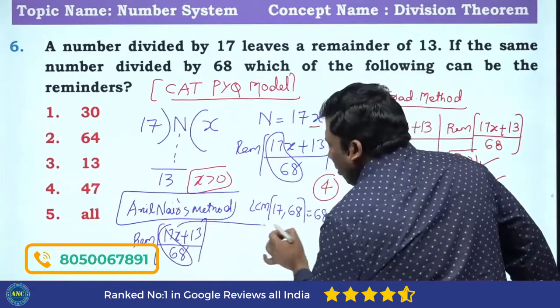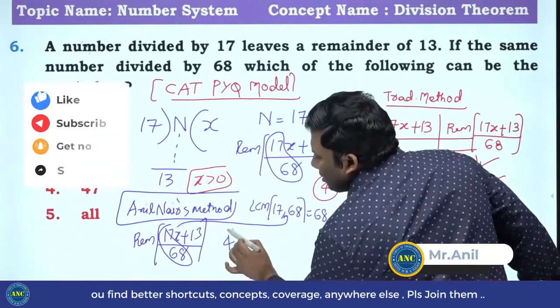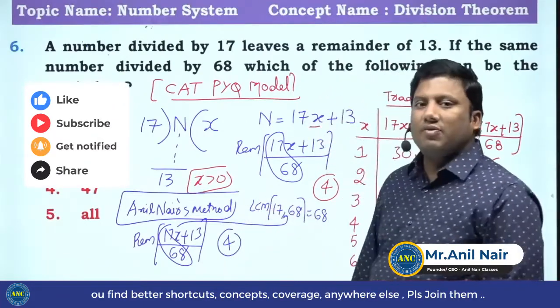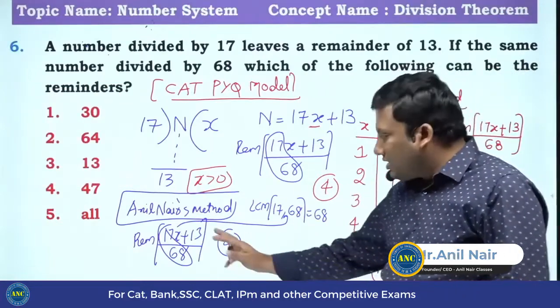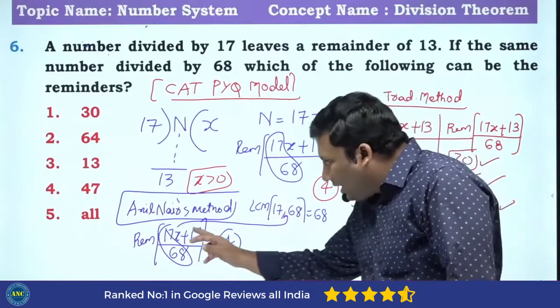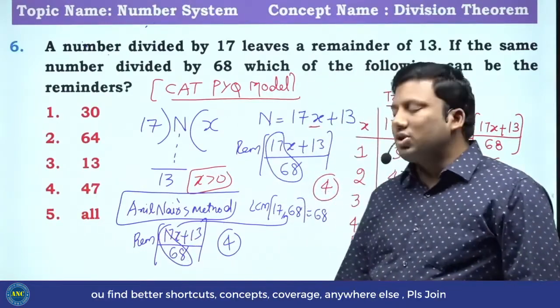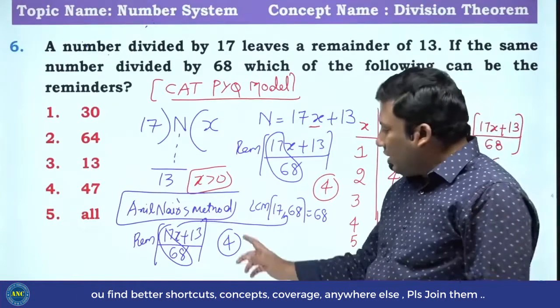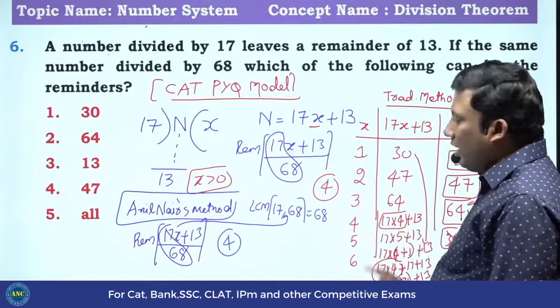17 goes how many times in 68? 4 times it will go. Answer will be 4. Answer will be 4. Sir, why you are getting 4? Why LCM of 17 and 68 you are taking? And how many times this portion goes in 68? 17 goes 4 times in 68, so answer is 4. Sir, why it is happening?